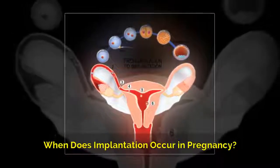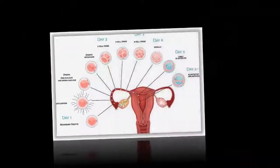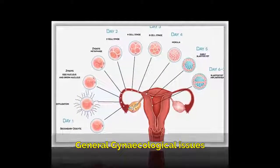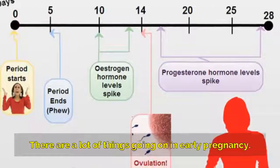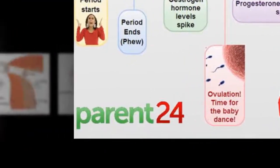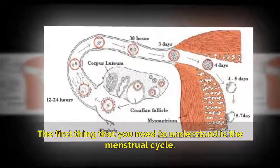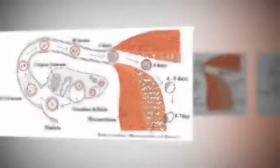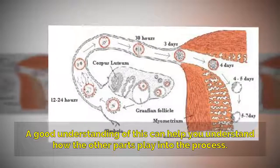When does implantation occur in pregnancy? There are a lot of things going on in early pregnancy. The first thing that you need to understand is the menstrual cycle. A good understanding of this can help you understand how the other parts play into the process.